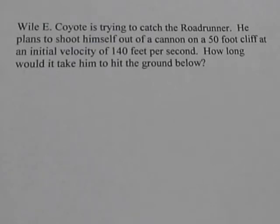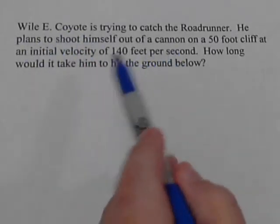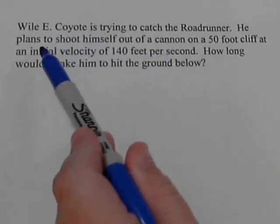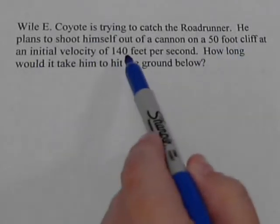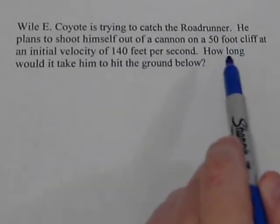Here we're going to use the quadratic formula to solve a problem involving Wile E. Coyote and the Roadrunner. Coyote is going to shoot himself out of a cannon on a 50-foot cliff using an initial velocity of 140 feet per second.